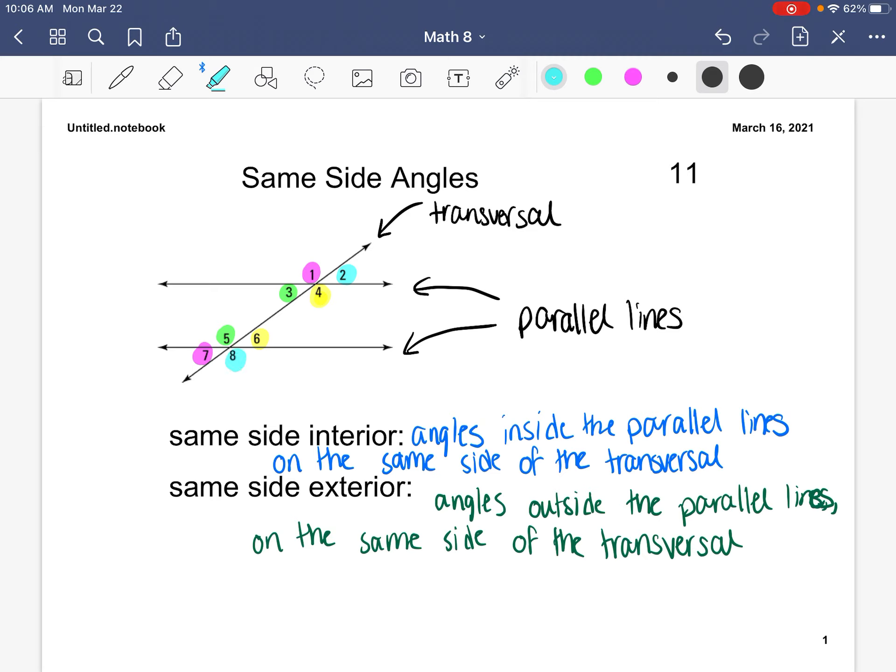Now the special thing about these angles is that they are supplementary. So what that means is when we are trying to solve for the missing angle measure of these angles, these angles are going to add up to 180 degrees.